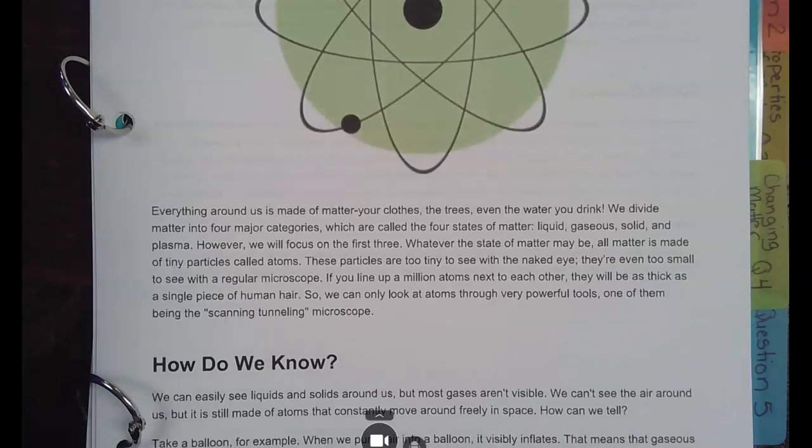However, we will focus on the first three. Whatever the state of matter may be, all matter is made of tiny particles called atoms. These particles are too tiny to be seen with the naked eye. So with your just your eye or your glasses eye, right? They're even too small to be seen with a regular microscope. If you lined up a million atoms next to each other, they will be as thick as a single piece of human hair. So if you pull out a piece of hair, I'm not telling you to do that, but if you pull out a piece of hair, a million atoms are as thick as your one piece of hair, a million.